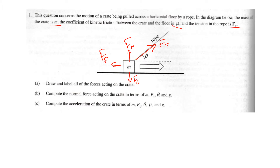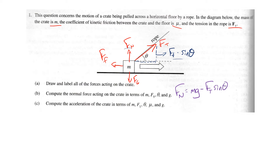Next, compute the normal force acting on the crate in terms of m, ft, theta, and g. With the tension force, there are two components — the vertical component is ft times sine of theta. The upward forces fn and ft sine theta must add up to fg, so the normal force fn equals mg minus ft sine theta.